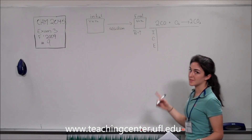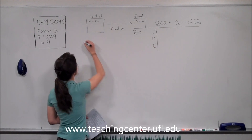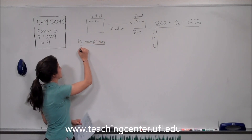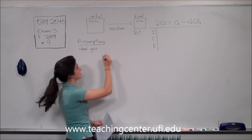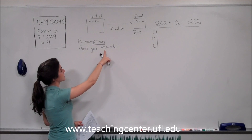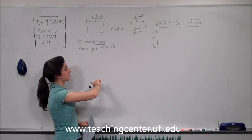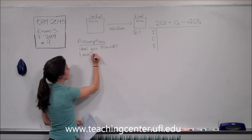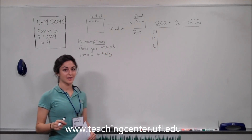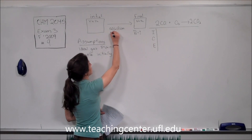Once we figure out the final species in our container, we can find the final pressure. To do this problem we need to make a couple assumptions. Our first assumption is that we're working with an ideal gas, so we can use the equation PV = nRT. Since they give us volume and pressure but not moles and temperature, the easiest thing to assume is that we have 1 mole initially. Temperature is also assumed constant.